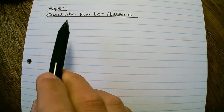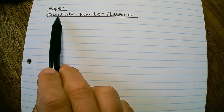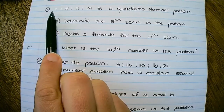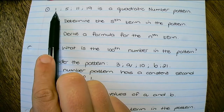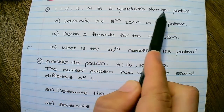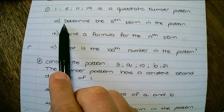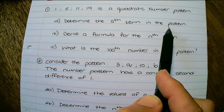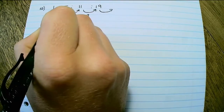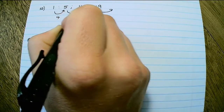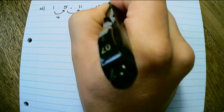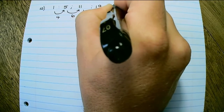In this video we'll discuss three questions on quadratic number patterns. In our first question we have 1, 5, 11, 19 as the quadratic number pattern and we are asked to determine the fifth term. We can see that the differences are continuously increasing by 2, so I need to add 10. The fifth term is 29.